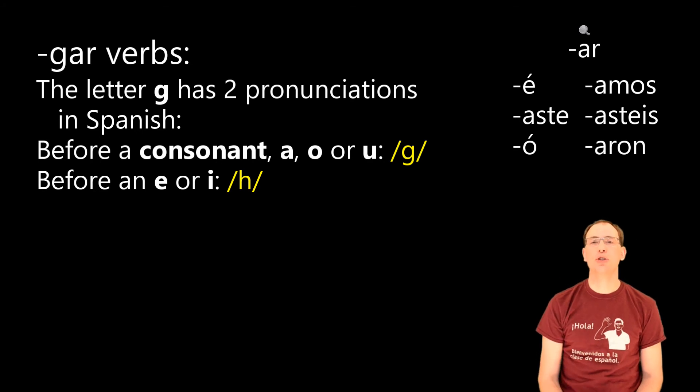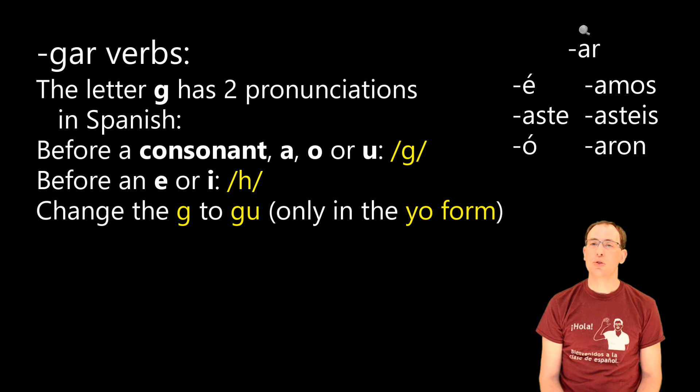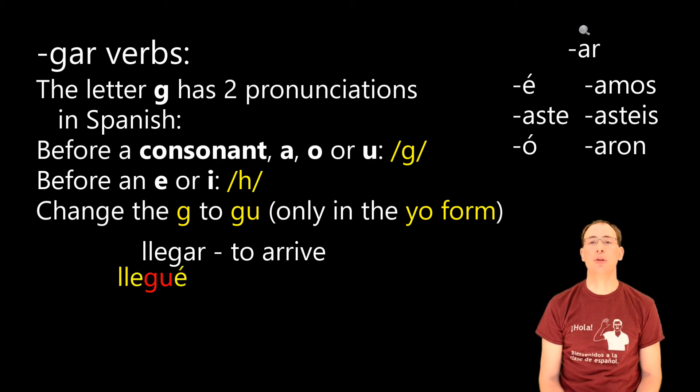As we look at the verb chart, it's just the yo form that has the vowel e that's going to come after my g sound. So in order to maintain the pronunciation of g, we have to have a spelling change. And we're going to change the g to gu in the yo form. So for a verb like llegar, to arrive, it's going to be conjugated llegué, but in order to spell that, it would have to be l-l-e-g-u-e with an accent. The rest of the forms keep the original spelling of the stem, since the vowel in the ending is either an a or an o, and g followed by a or o is pronounced /g/.